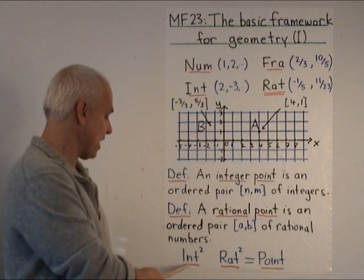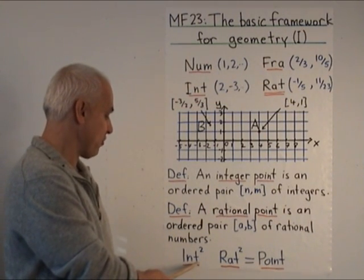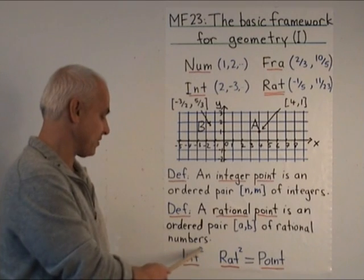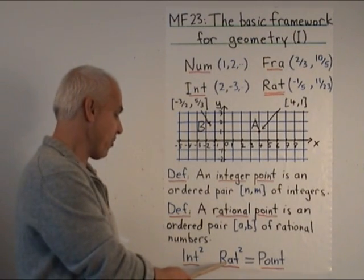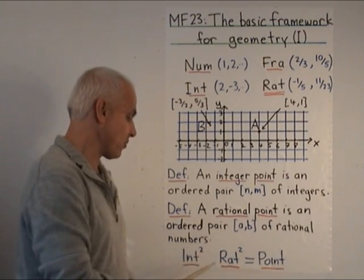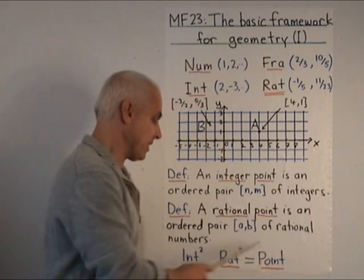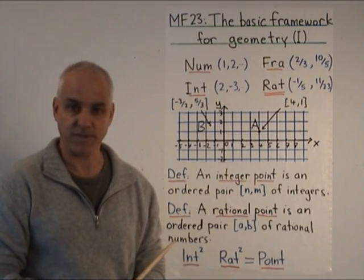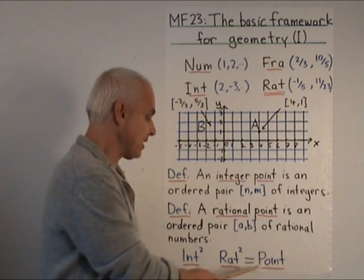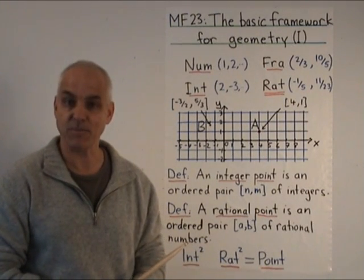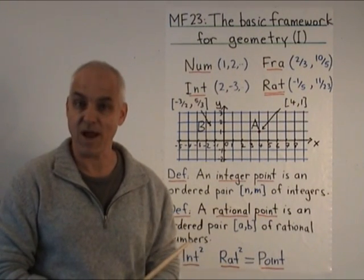And now we have two new types of objects. Integer points, which we might represent by int squared, and rational points, which we might represent by rat squared, or more pleasantly by the term point. So point is a new type of mathematical object. It's a pair of rational numbers.